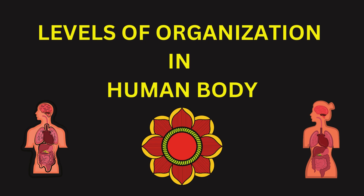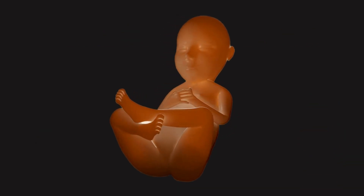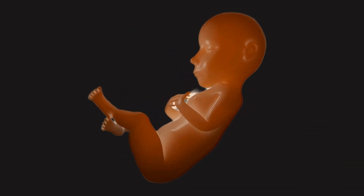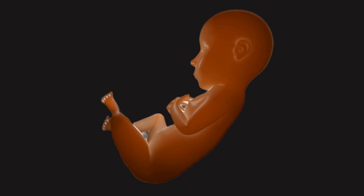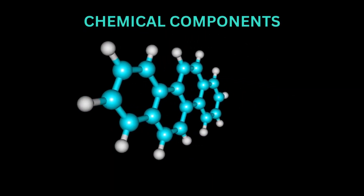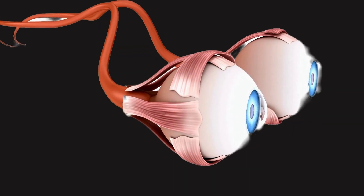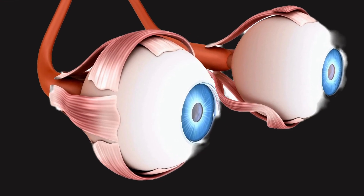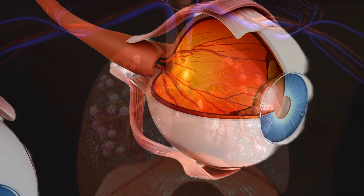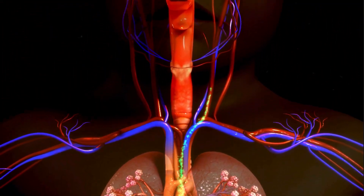The levels of organization refer to the hierarchical arrangement of structures in living organisms, ranging from simple chemical components to complex systems of interacting organs. These levels build upon one another to create a functional and organized biological entity.